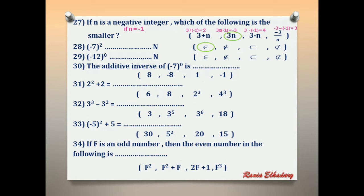Number 29: (negative 12) power 0. Negative 12 all power 0 equals 1. Does 1 exist in N? Yes — the answer is 'belong to N.'